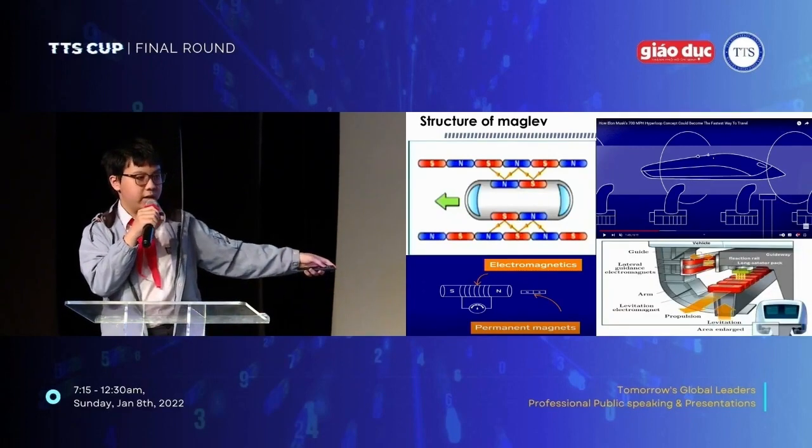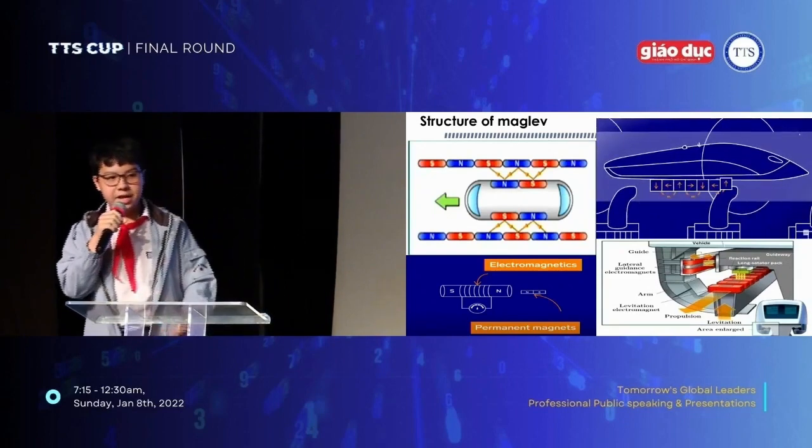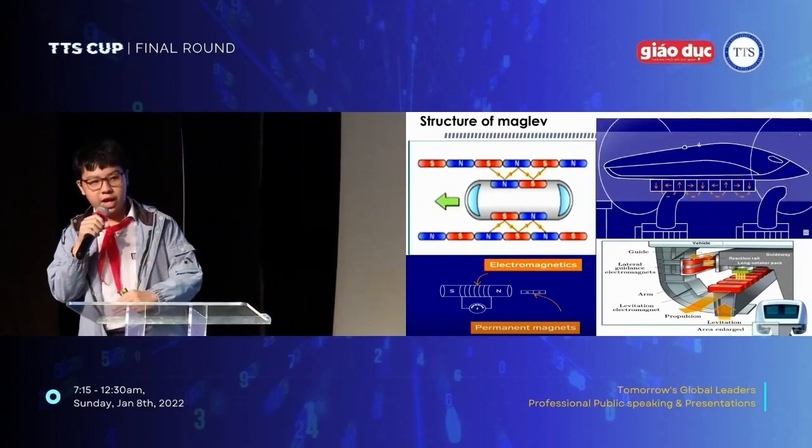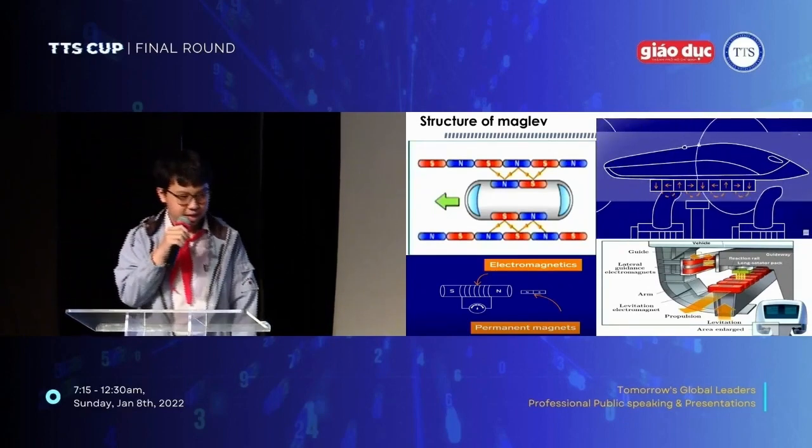These magnets were put at the bottom of the hyperloop too, so it can create repulsion, lift the hyperloop, and then move the hyperloop at a very high speed.